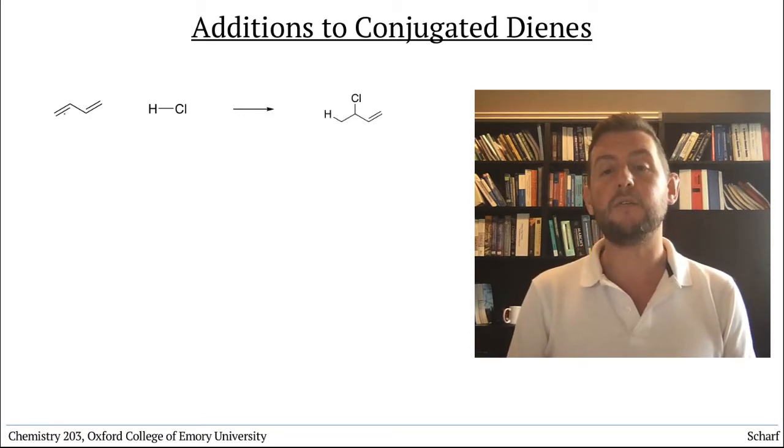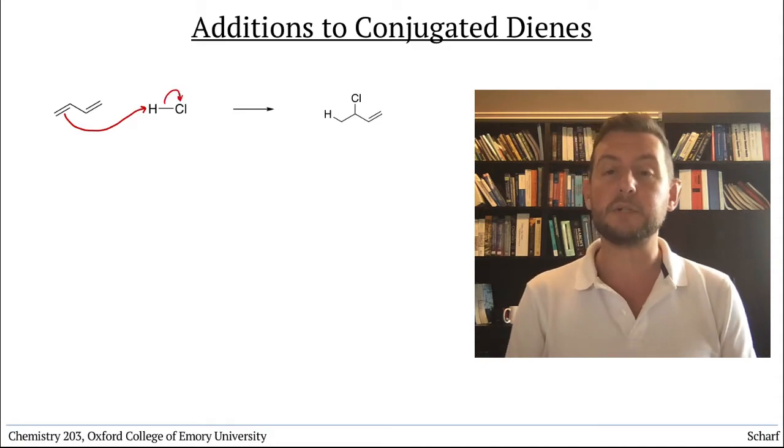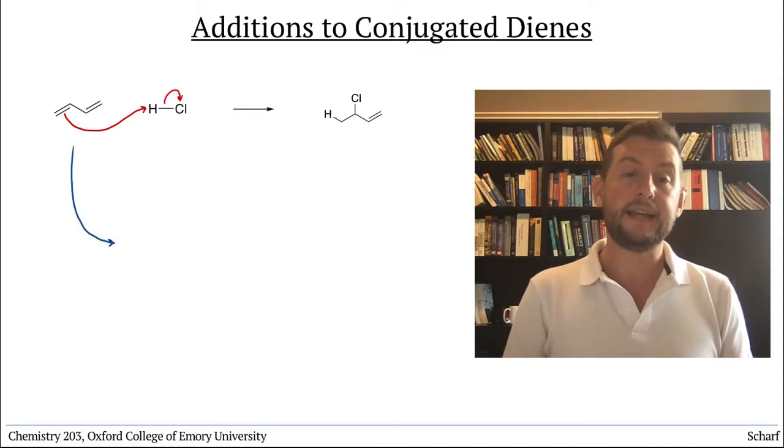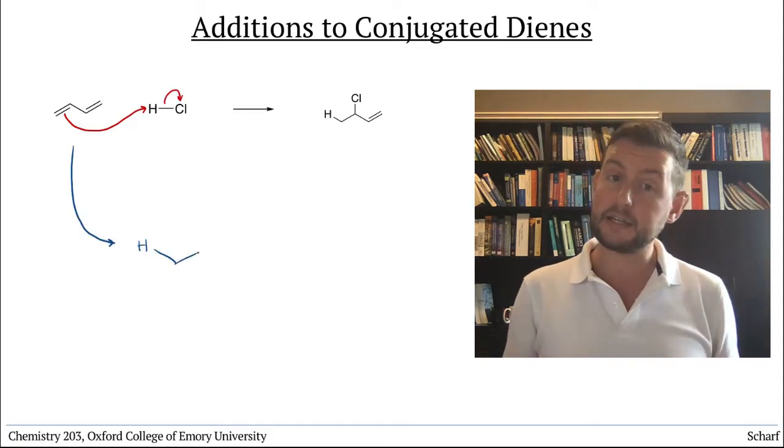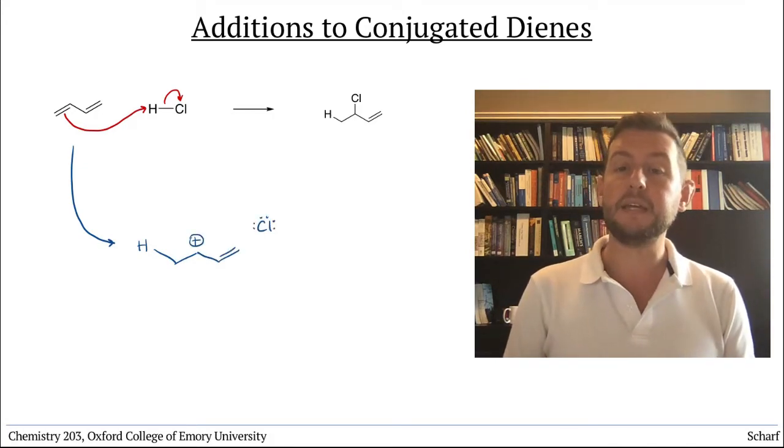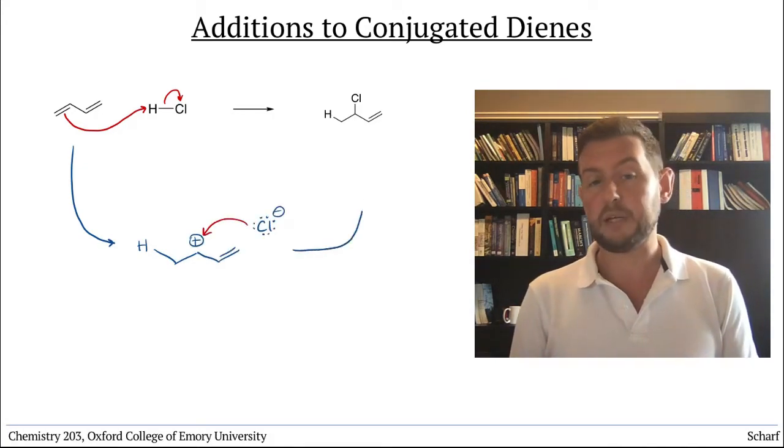The mechanism would involve one of the alkenes attacking sigma-star HCl, adding an H atom here resulting in a secondary carbocation, and the carbocation being intercepted by the chloride like this.